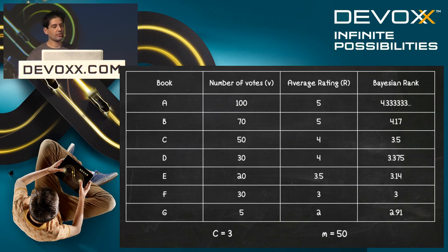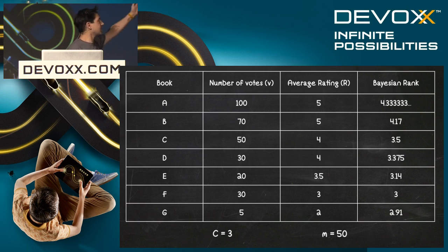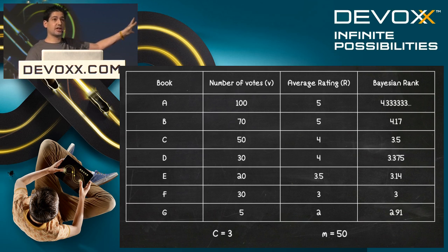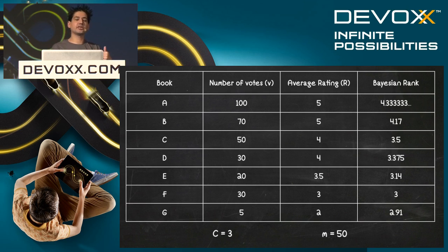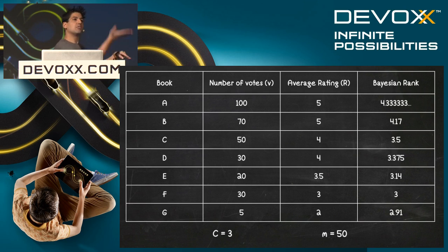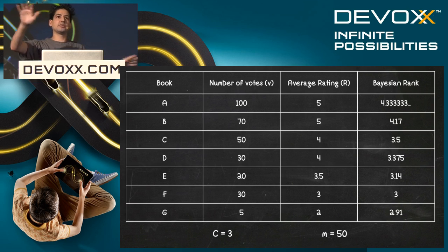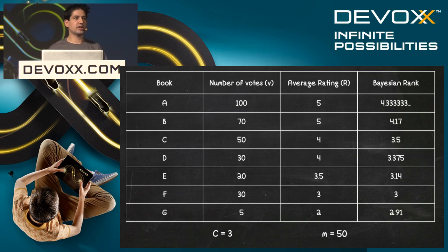It's a bit of a misnomer because there's no such thing in a proper maths book, but you'll find it all over the internet. Basically, we calculate a new rank, a new average, by adding m extra votes of the average score to every entry. What we're doing is shifting everything closer to the average. At the top we've got 100 votes of average rating five — that gets pulled down to 4.3 recurring. Below that, same five stars but only 70 votes, pulled even closer to the average of 3.5. At the bottom, they're getting pulled up towards the average.